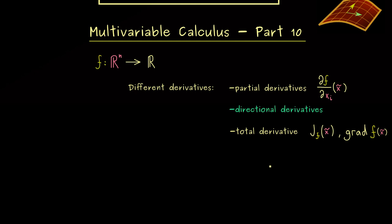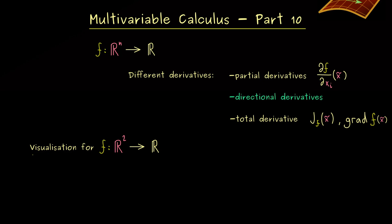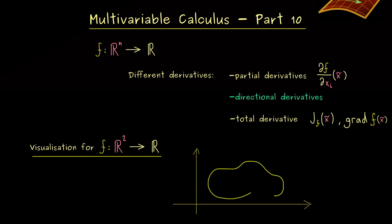As often, we can present a good visualization if we consider the two-dimensional case, where the domain of the function is given by the plane. The function could be represented by contour lines, and this picture helps explain what the partial derivatives do. For example, let's fix a point x̃ where we want to calculate the partial derivatives.